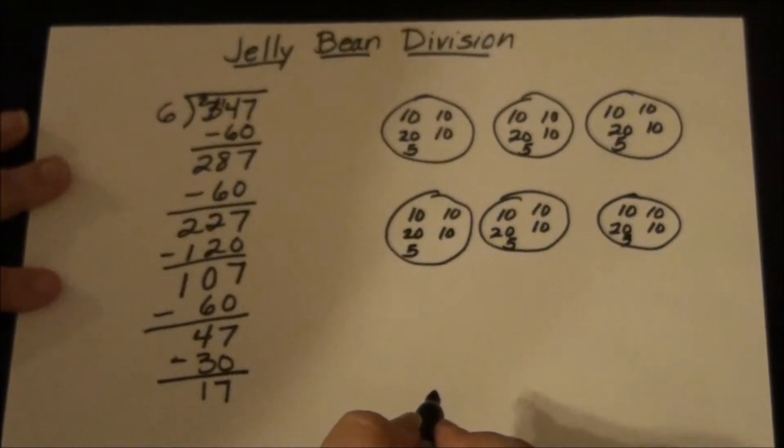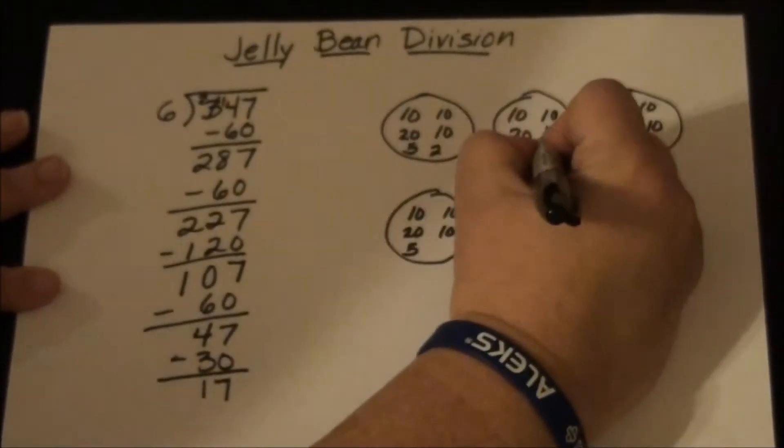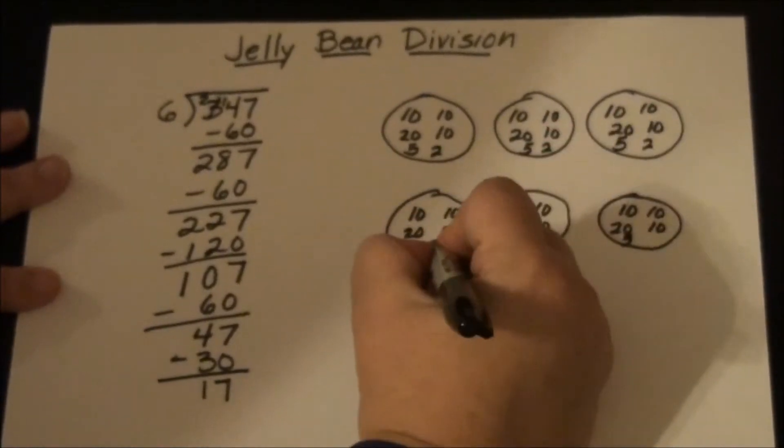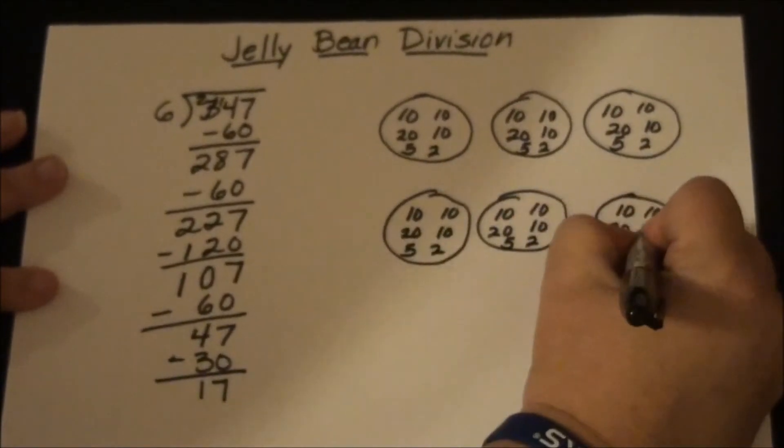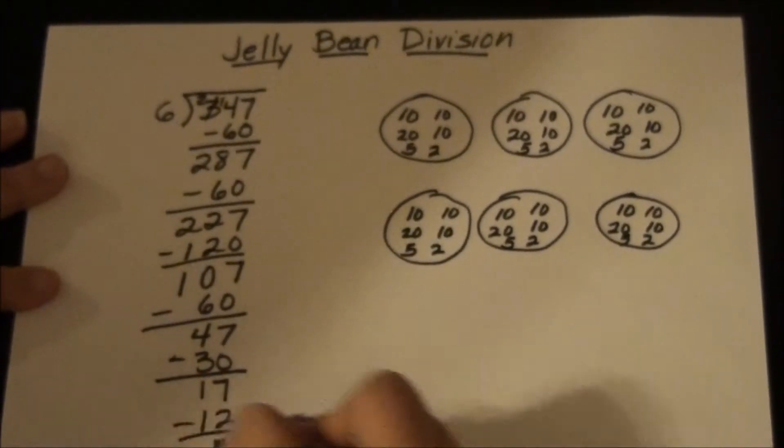So I know I can't do 5 anymore, but I can count easily by 2s. So I'm going to do 2s: 2, 4, 6, 8, 10, 12. So I subtract 12. That's 5 left over.